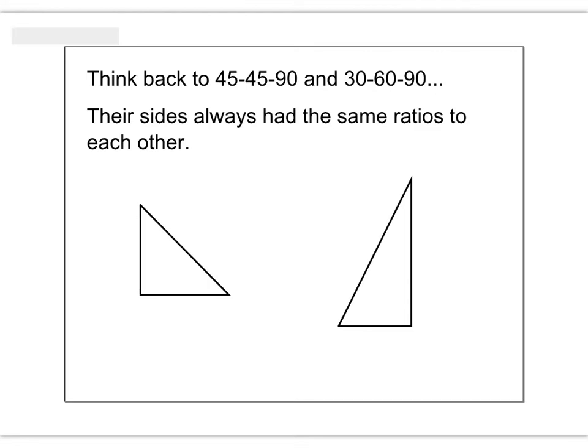Hi everyone, this is Mrs. Snowbeck. Before we start lesson 6.4, I want you to think back to our previous lesson when we talked about some special right triangles. The first one was called the 45-45-90 triangle, because the three angles inside it were 45 degrees, 45 degrees, and 90 degrees.